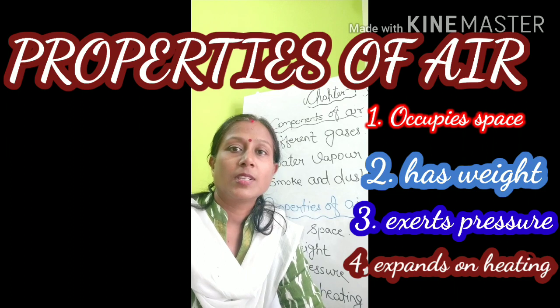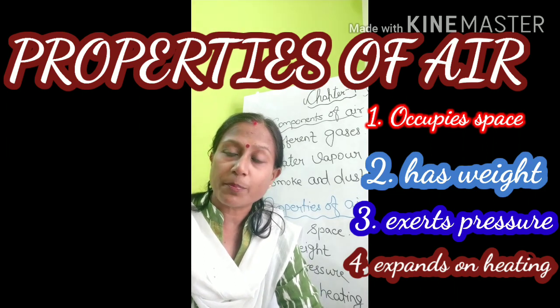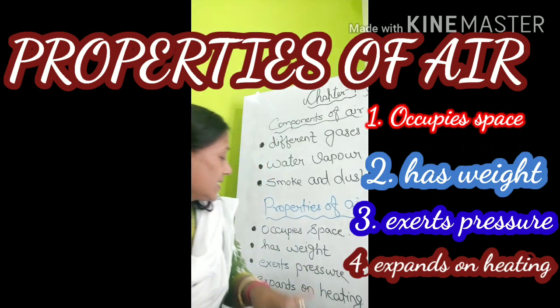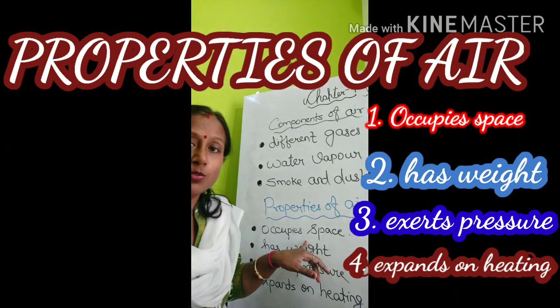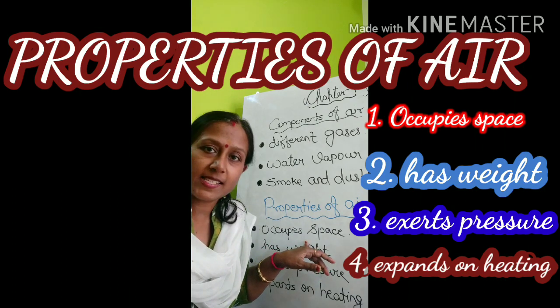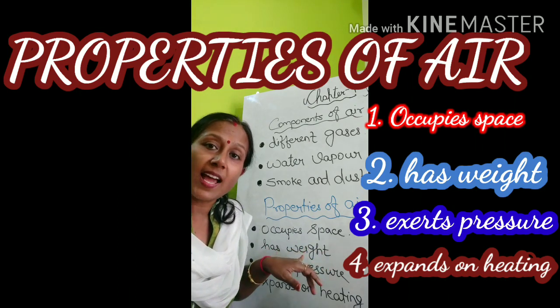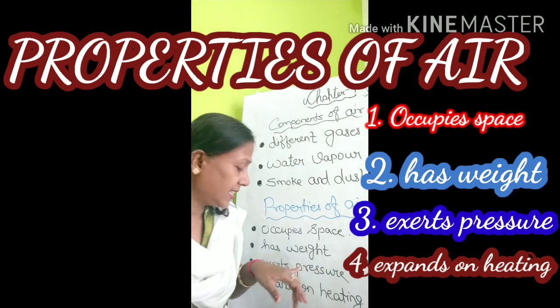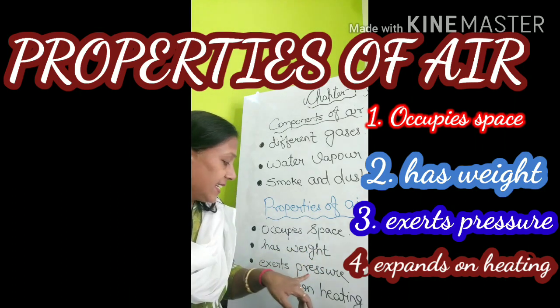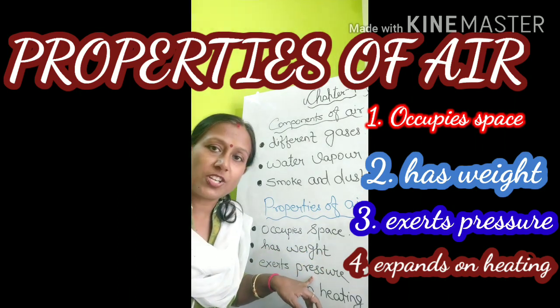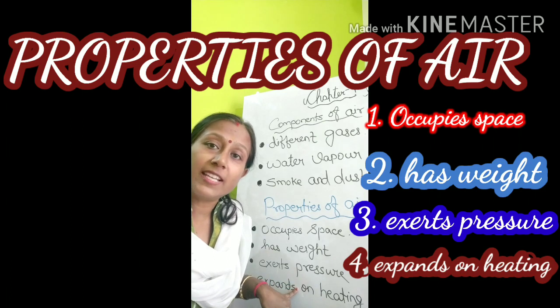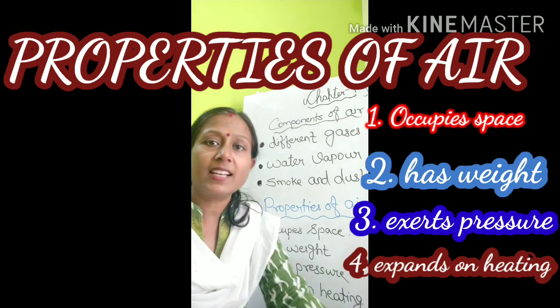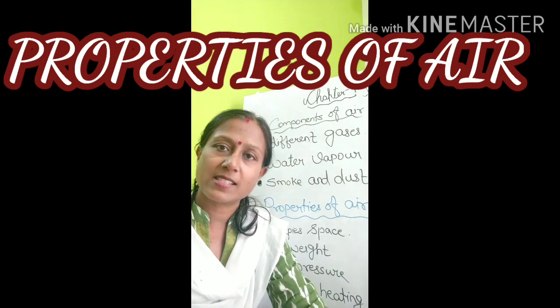So the four main properties of air are: first, air occupies space; second, air has weight; third, air exerts pressure; and fourth, on heating air expands.